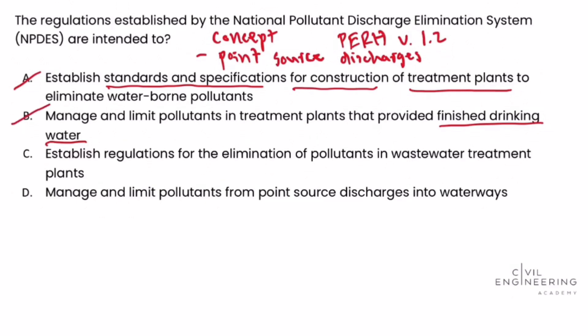Answer choice C says: establish regulations for the elimination of pollutants in wastewater treatment plants. Well, it does establish regulations for the elimination of pollutants — we like that part. But again, it's not just in wastewater treatment plants. The point source is what we're looking for here. The point source could be a wastewater treatment plant or it could be some other effluent discharge point such as the end of a stormwater pipe. So that makes answer choice C too limiting.